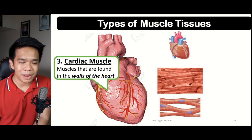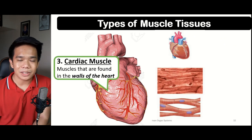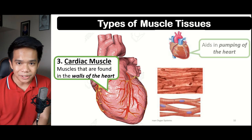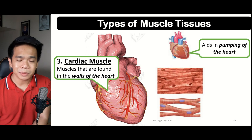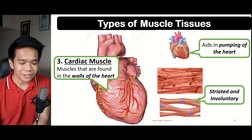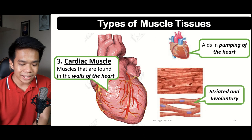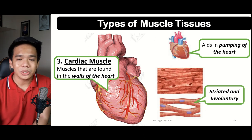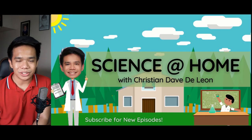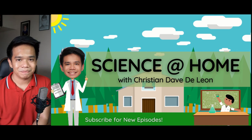Lastly, we have the cardiac muscles, found within the muscle walls of the heart. Their main function is for the pumping of the heart, helping pump blood to the different parts of the body. Cardiac muscle tissues are considered striated and involuntary — they have striations that help in the pumping mechanism of the heart, and we cannot control the movement of the heart muscle. That concludes our episode for today. This has been Sir Dave saying keep safe and always have fun learning science at home. Goodbye!